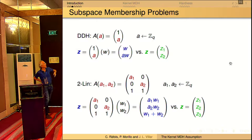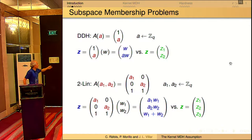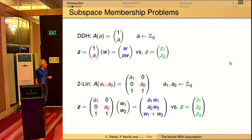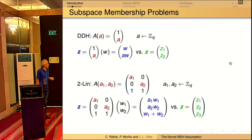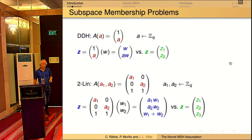You can rewrite these problems as matrix problems, just defining a matrix depending on parameters. DDH is defined by a one-column matrix, and the only parameter is A. But the linear problem uses two parameters, A1 and A2, and you can generalize this to other problems. We use the columns of the matrix as generators of the vector space, and then the vector Z is either a random linear combination of the columns or a random vector in the space.